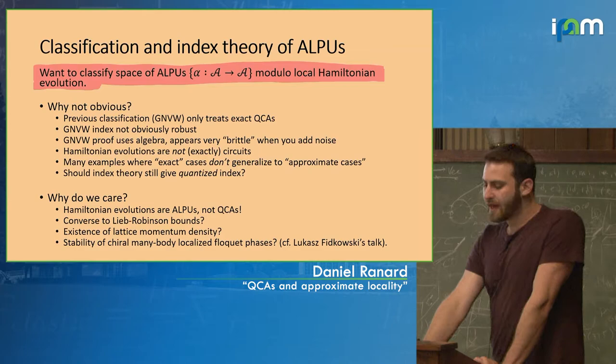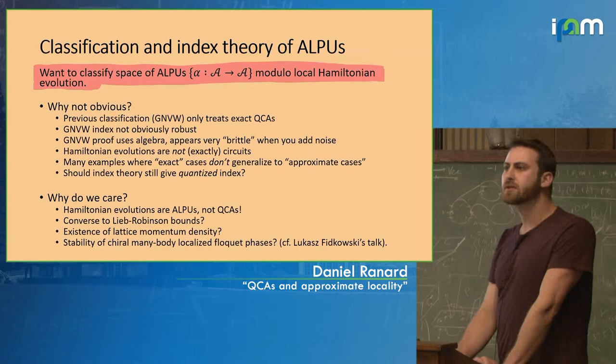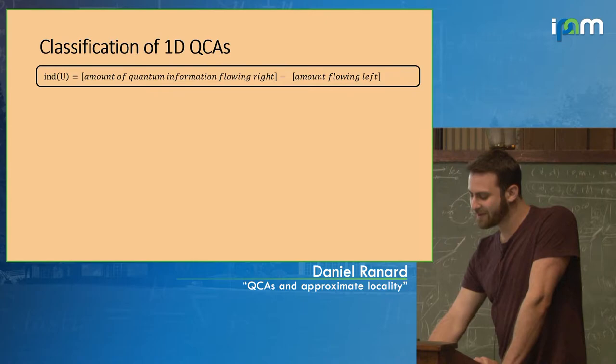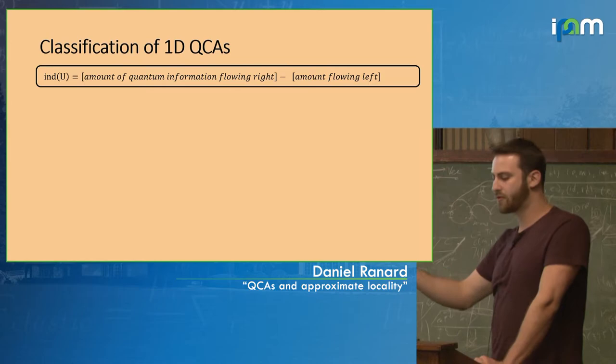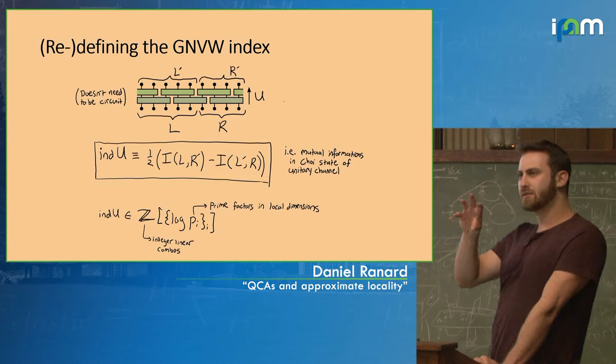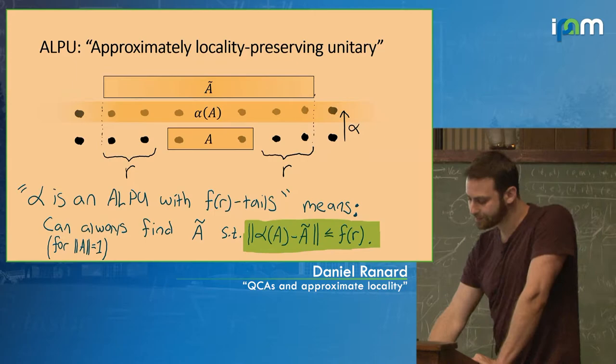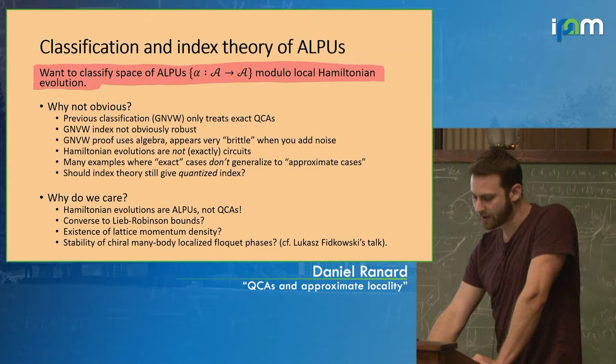A question we had was: should the index still be quantized when there are tails? The quantization of the index has to do with the fact that you transfer a qubit or a qutrit, giving you a two or a three. If instead these qubits aren't being directly translated but are leaking over the whole chain, you might wonder whether there are still integers involved. It turns out that there are, but it wasn't obvious from the get-go.